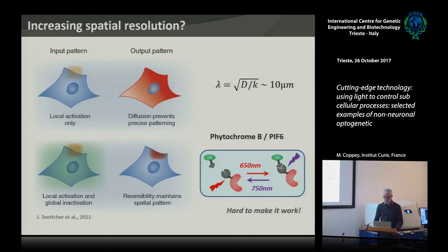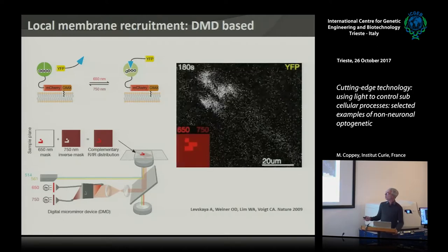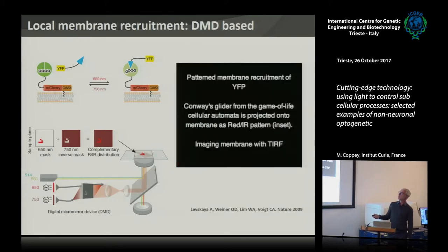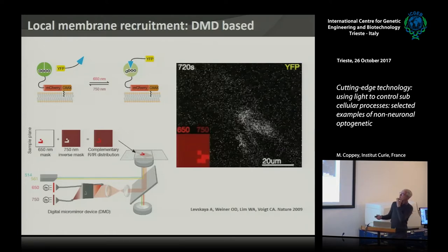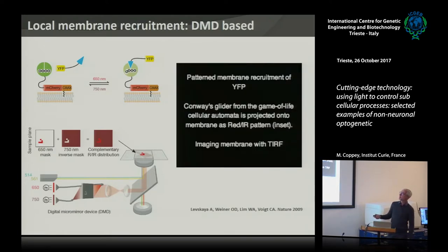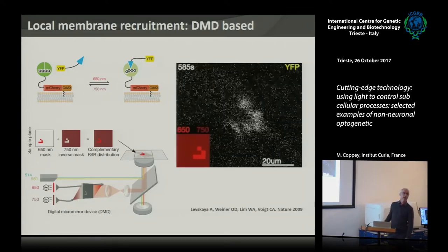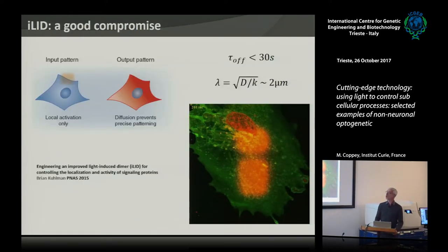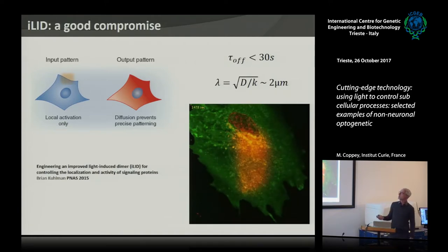Here is one example from a seminal publication where they used a digital micromirror device to send a complementary pattern of light — activating light in one pattern and inactivating light in the complementary pattern. They used the Game of Life pattern just for fun, and you can see that you can achieve something very local.